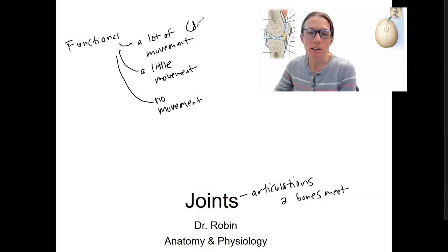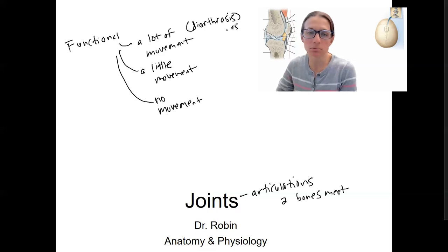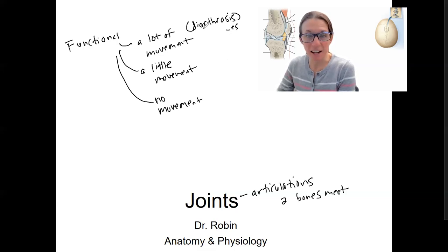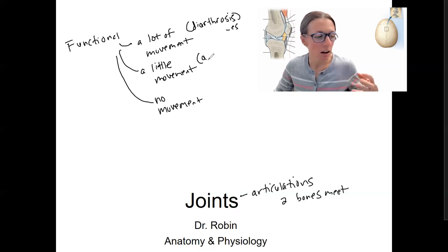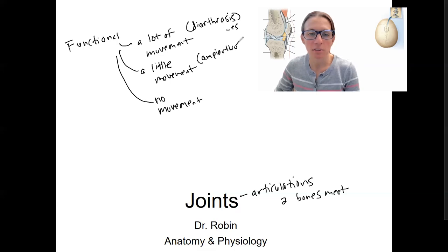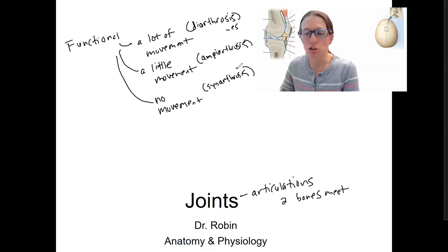A lot of movement is going to be diarthroses — diarthrosis is singular, diarthroses is plural. These are highly mobile joints. The word 'arthrosis' sounds like it has 'arthritis' in there — 'arthro' refers to joint, so that's helpful to see. A little movement is amphiarthroses, amphiarthrosis for singular. And no movement is going to be synarthroses. I'll go over those terms a bit more.